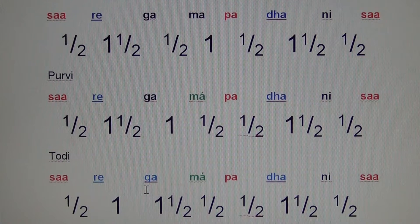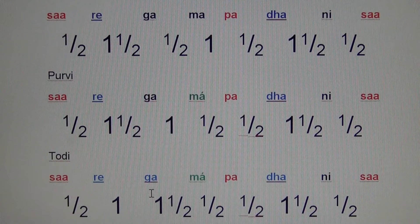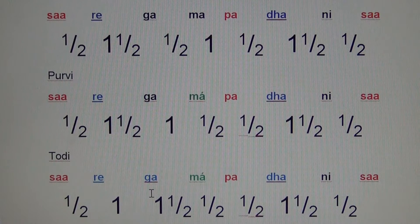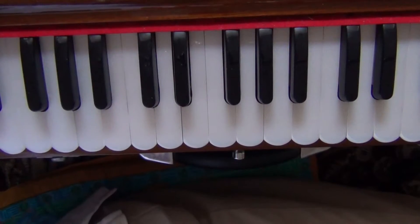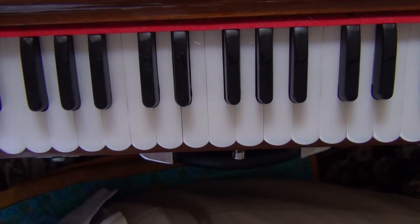This is actually a good way of remembering these three Thaats. Let's go over to the harmonium now and take a look at what happens there. After viewing the changes in the scale intervals, let's take a look at how that translates on to the harmonium.